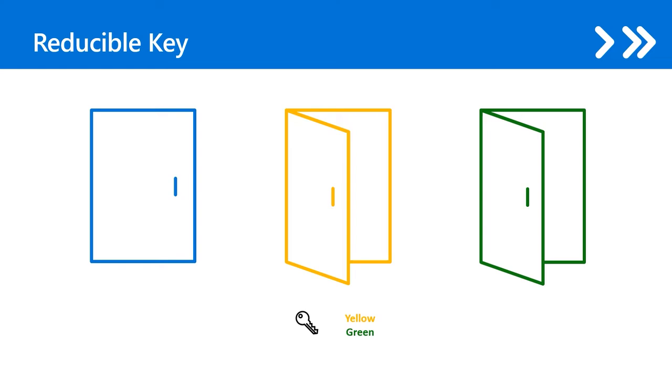Since you only need access to the yellow and the green door, you should keep your master key safe and remove the green key that is redundant. In the Microsoft identity world, the keys can be represented as permissions, access as your resources, and yourself the key holder as an application. If you understand the risk of carrying unnecessary keys, you will be aware of the risk of your applications having unnecessary permissions.